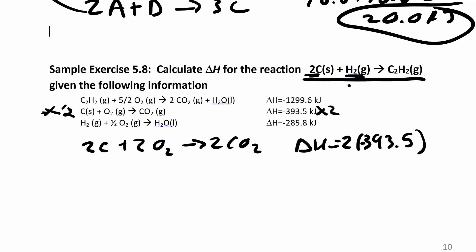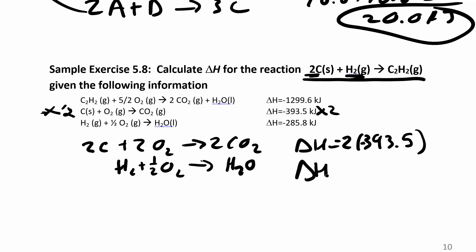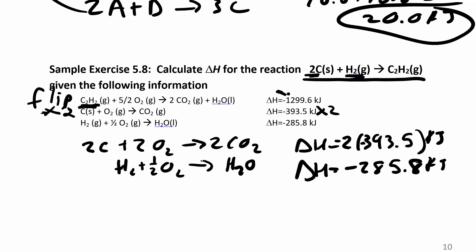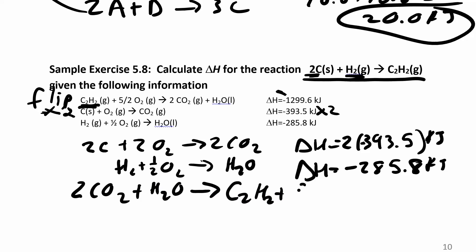The next reaction needs to have hydrogen in it. I find one with H2 as a reactant, and I want one as a reactant — so I don't have to change that at all. I keep it just as it is: H₂ plus one-half O₂, delta H is negative 285.8 kilojoules. Don't be scared of fractions. Now for C₂H₂ — I see it over here as a reactant but I want it as a product, so I'm going to flip it around. When you flip it you change the sign. Flipping it gives 2CO₂ plus H₂O gives C₂H₂ plus five-halves O₂.